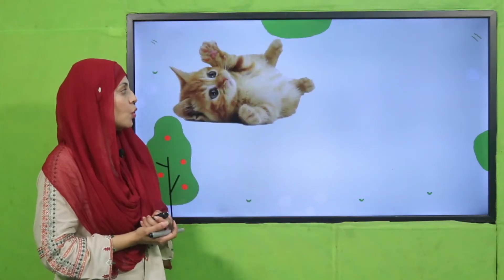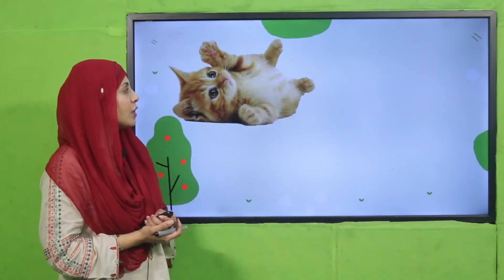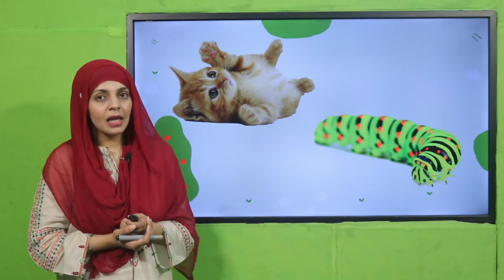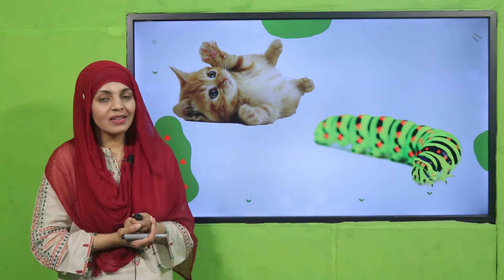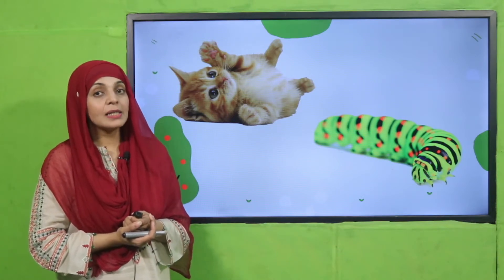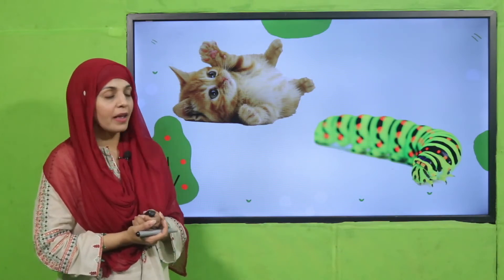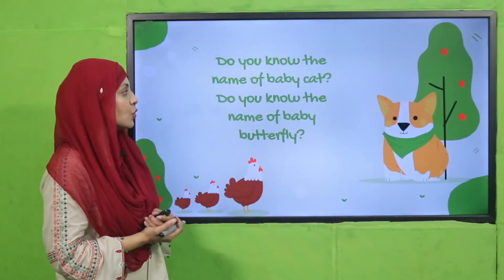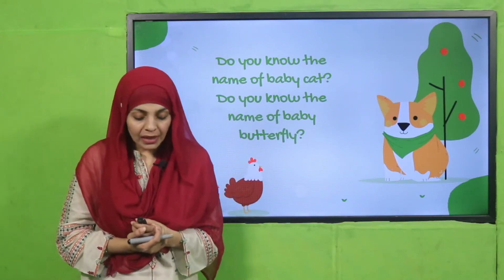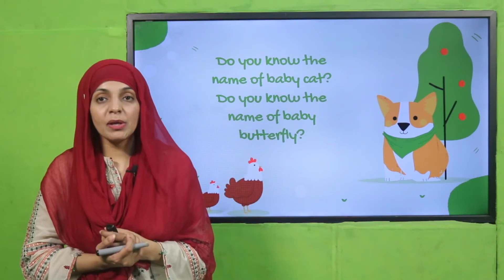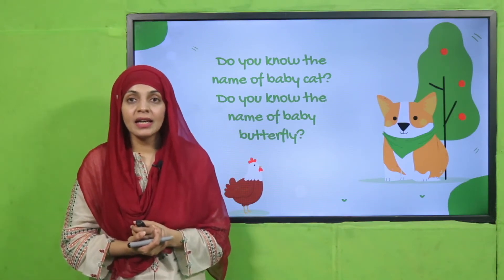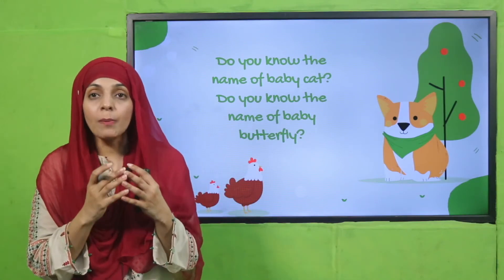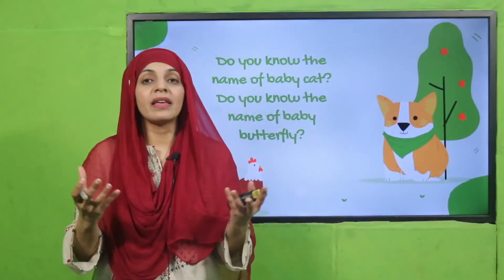Now is the time for an activity. Look at these pictures — this is a very cute baby cat, and this is a caterpillar, which is a baby butterfly. Do you know the name of a baby cat? It is called a kitten — that is the specific name we use for a baby cat.